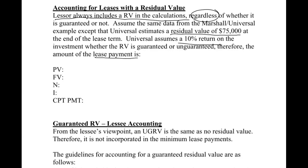The lessor always calculates the payment. The present value of the asset they're giving up is $250,192 — these numbers come from the prior videos. The future value is $75,000, meaning they expect to get an asset back worth $75,000 at the very end of the lease. It's still a five-year lease term and their implicit rate is 10%. We compute the payment and it's $48,832.